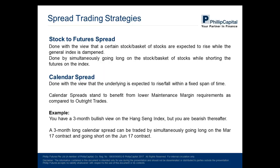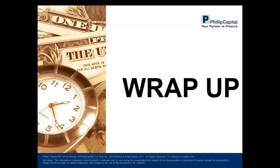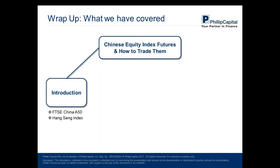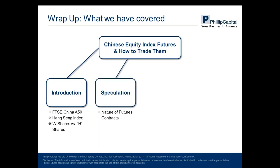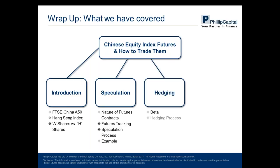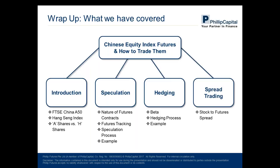There are many exciting things you can do with futures contracts — speculation, hedging, and spread trading. To wrap up: today I introduced the FTSE China A50 and Hang Seng Index, and the difference between A and H shares. We covered speculation — the nature of futures contracts, how futures track the underlying, and a speculation example. We talked about hedging — how important beta is and a step-by-step hedging process. And lastly, I introduced spread trading: the stock-to-future spread and the calendar spread, as a broad overview of futures in the Hong Kong and Chinese equity space.